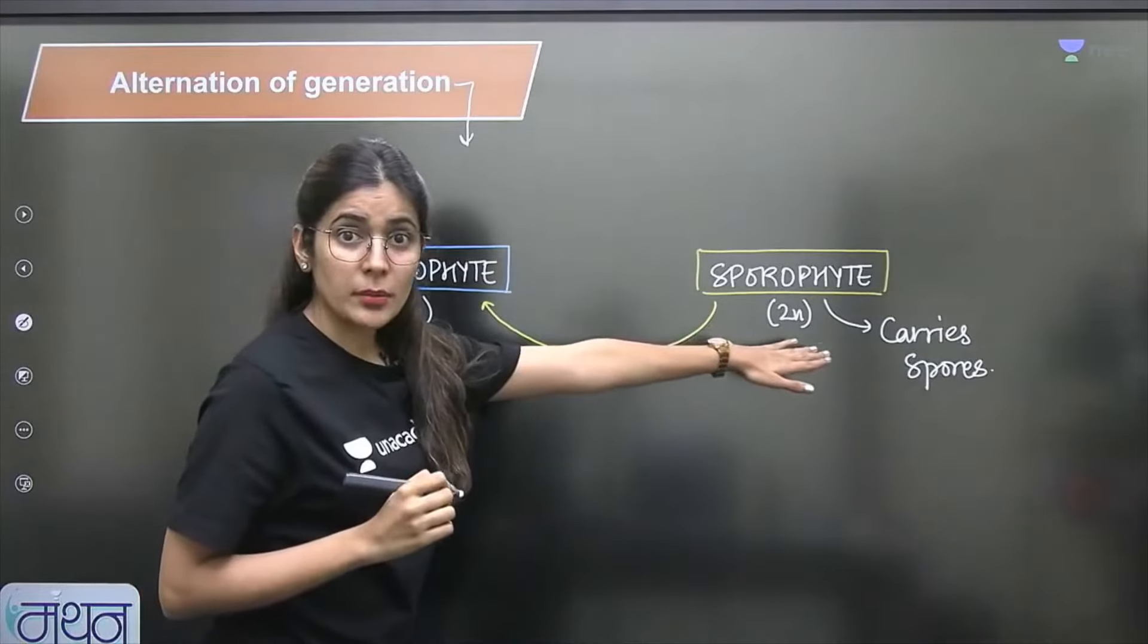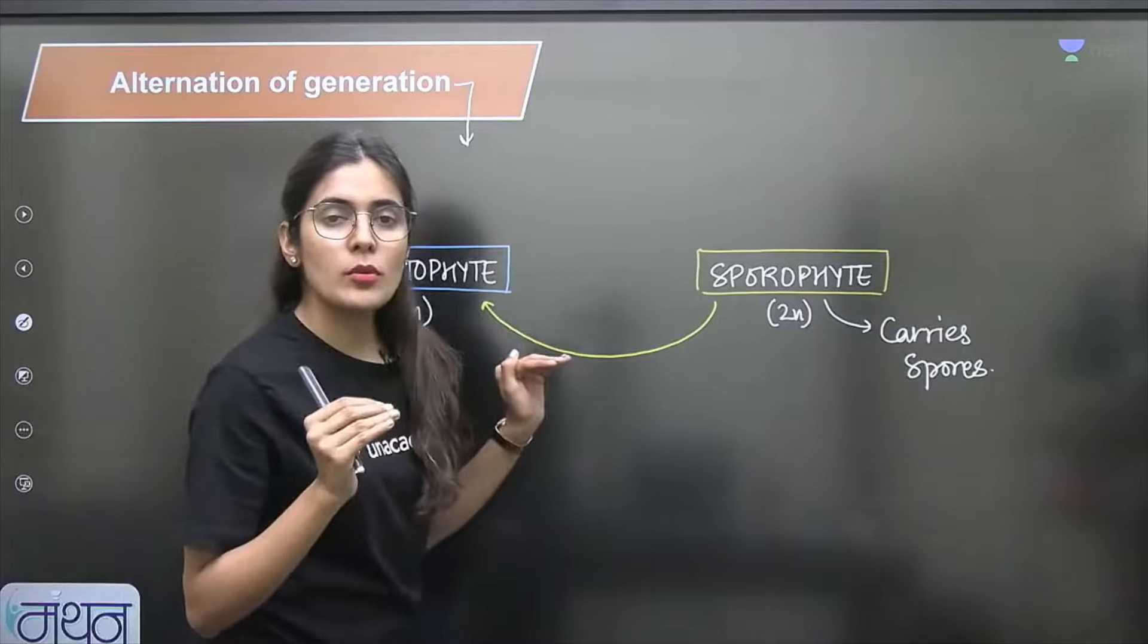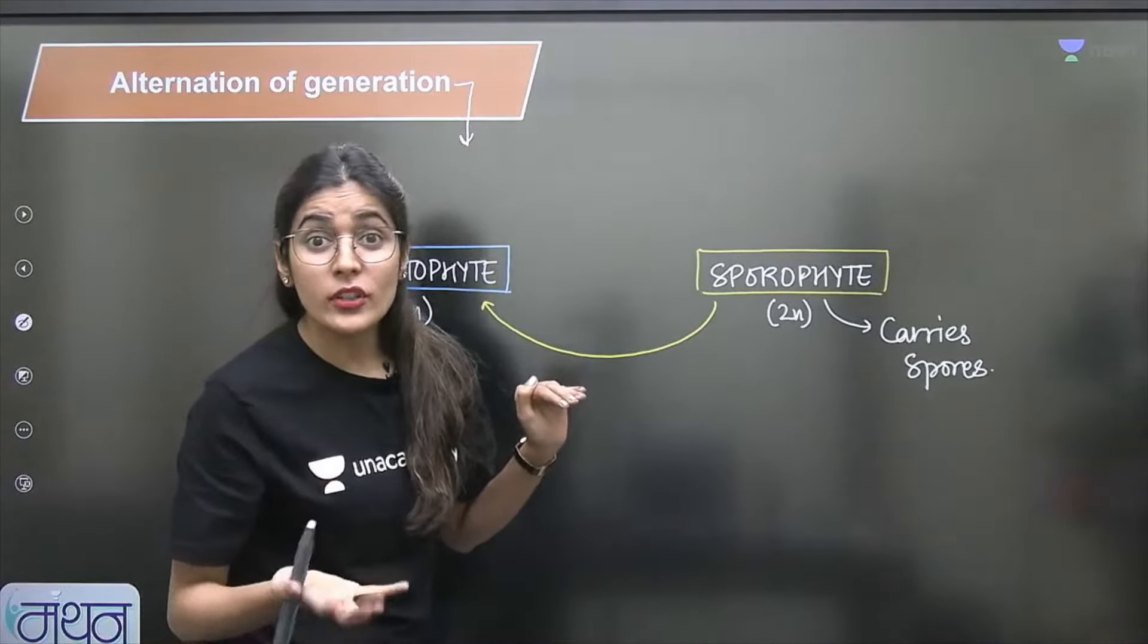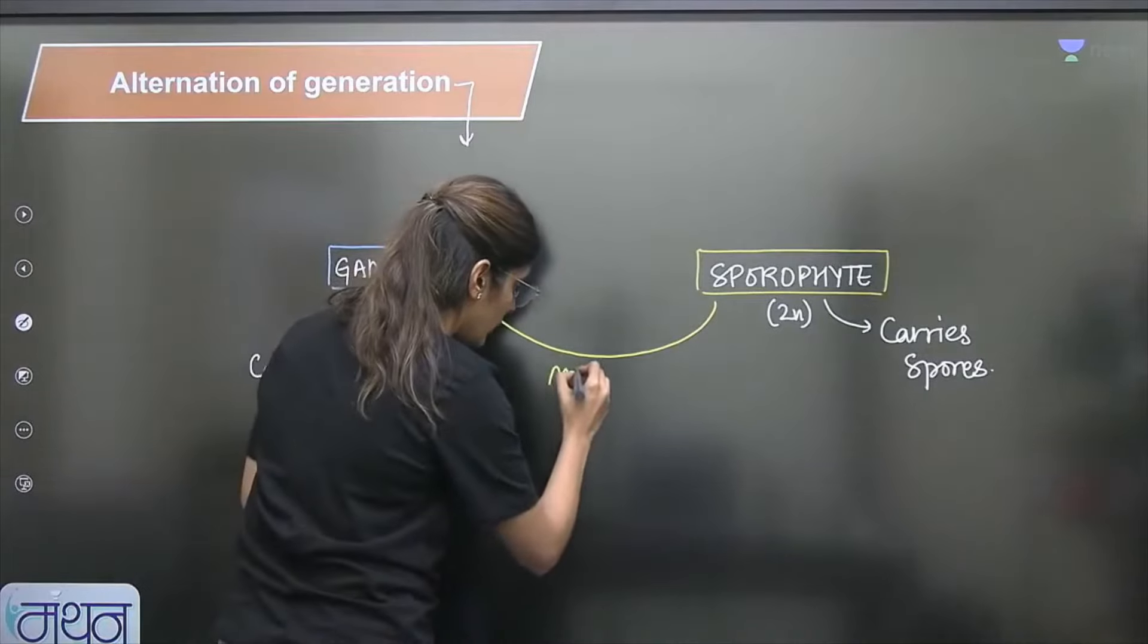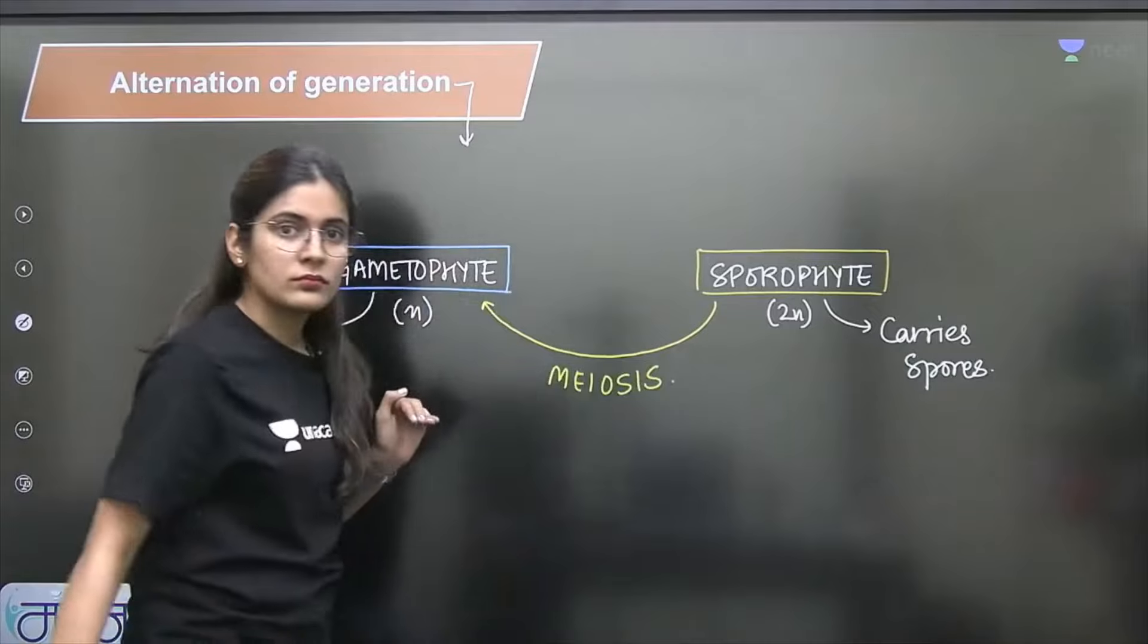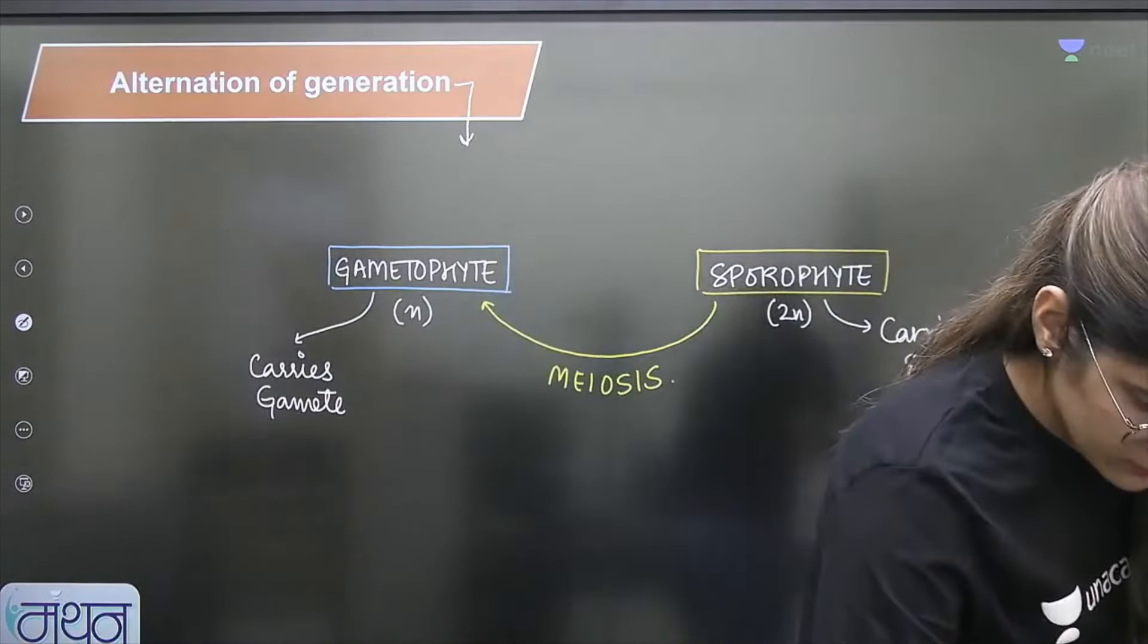Diploid structure is diploid. If you want to reduce the chromosome number by half, which process will you do? You will do meiosis. Meiosis is reduction division, isn't that right?